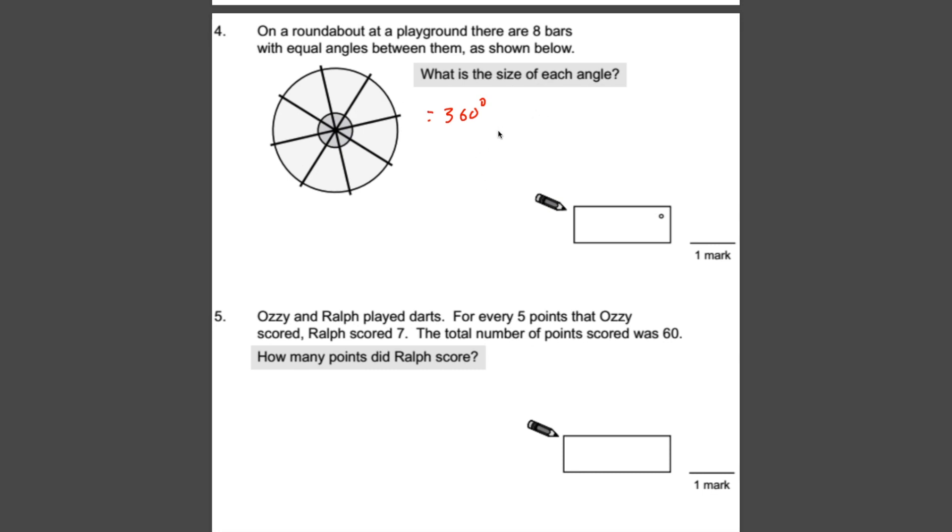So 360 divided by eight. What we could do is half it, half it, and half it again to save us doing some working out. So half of 360 would be divided by two. That would be 180. Half it again, that would be 90. And half it again, we've got 45. So eight times 45 makes 360. Each one of these is worth 45 degrees.